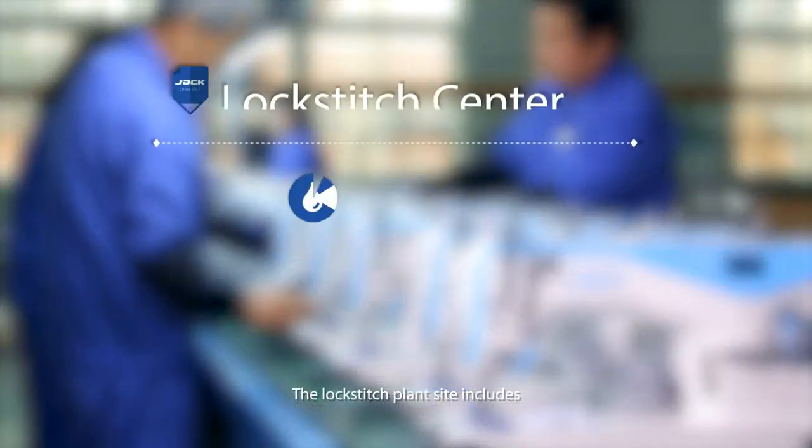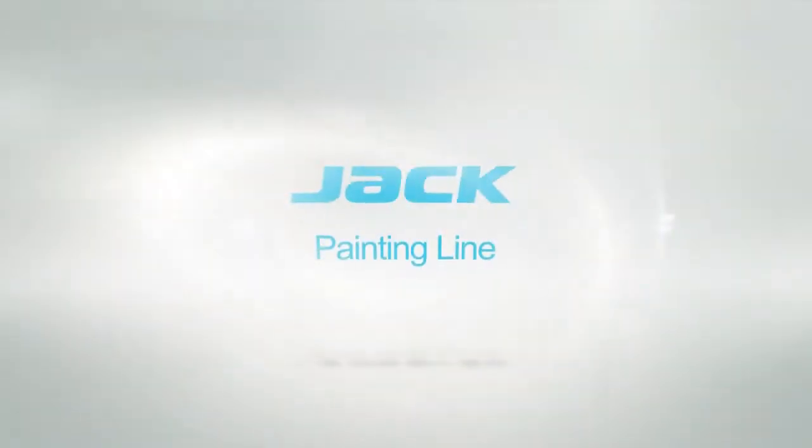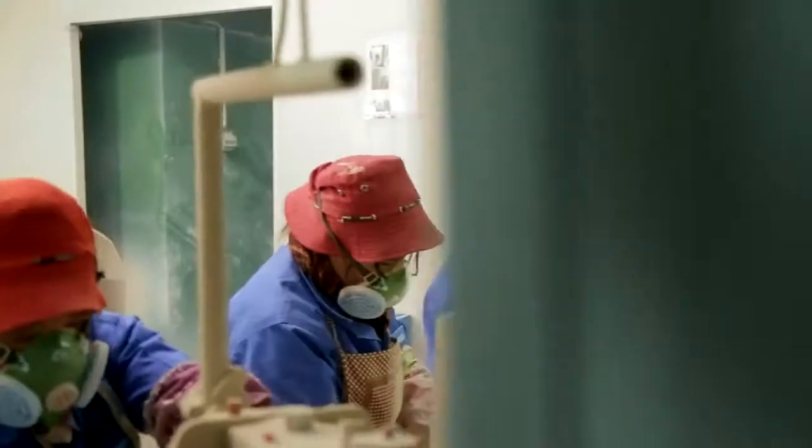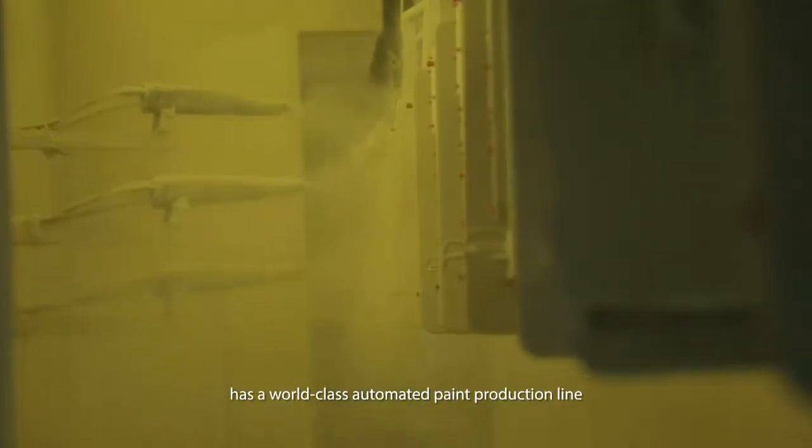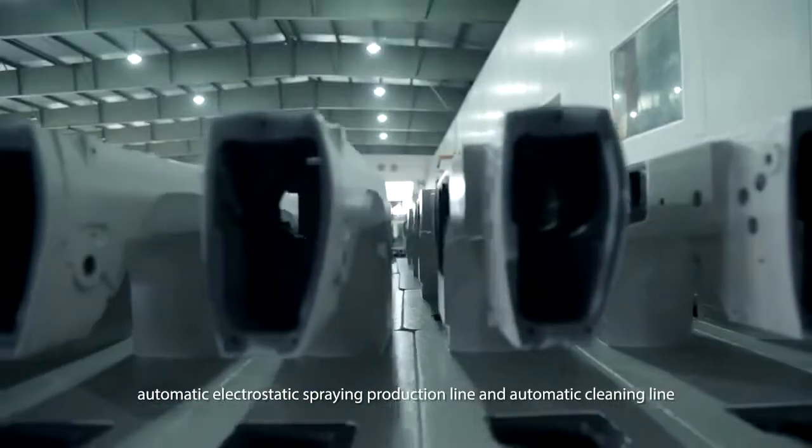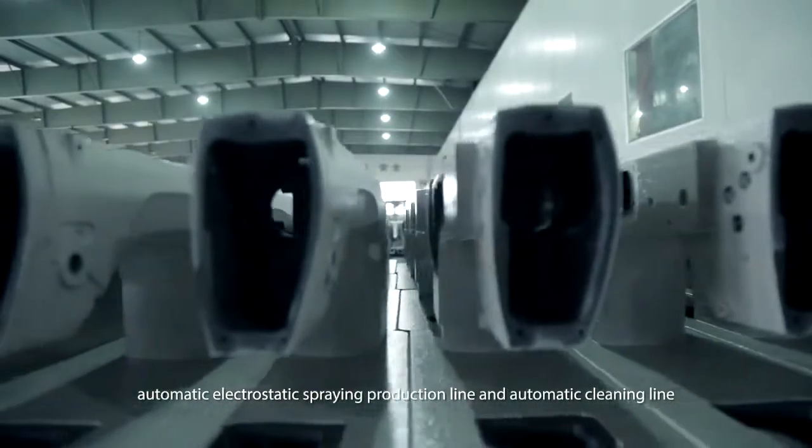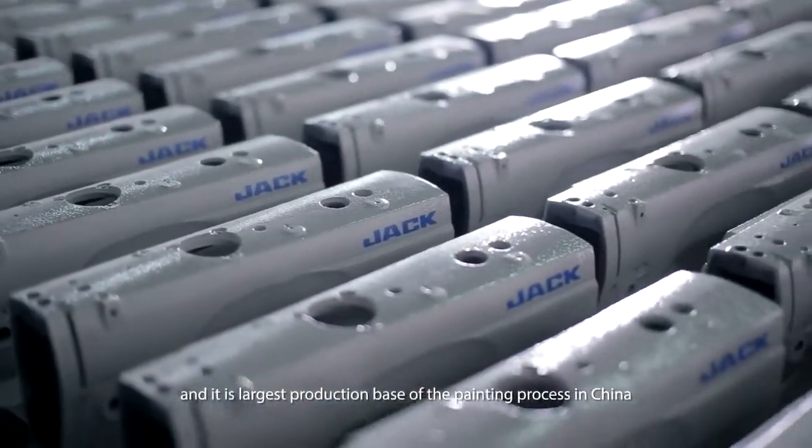The lockstitch plant site includes metal working workshop, painting workshop, assembly workshop, and packaging workshop. The lockstitch machine painting workshop has a world-class automated paint production line, automatic electrostatic spraying production line, and automatic cleaning line, and is the largest production base of the painting process in China.